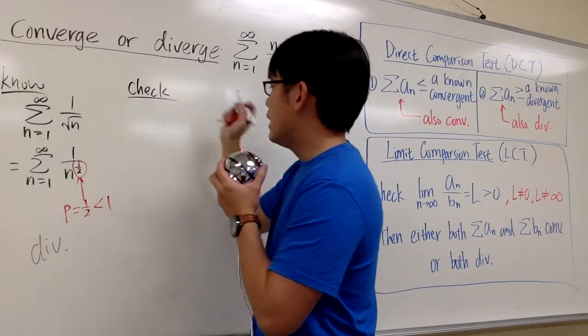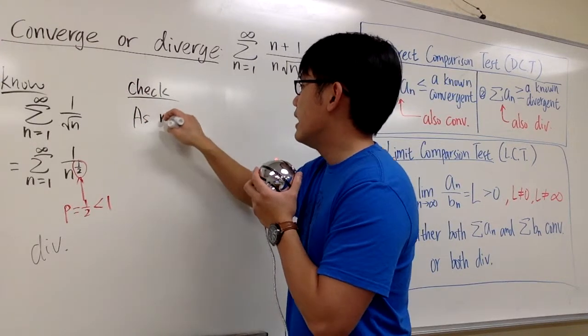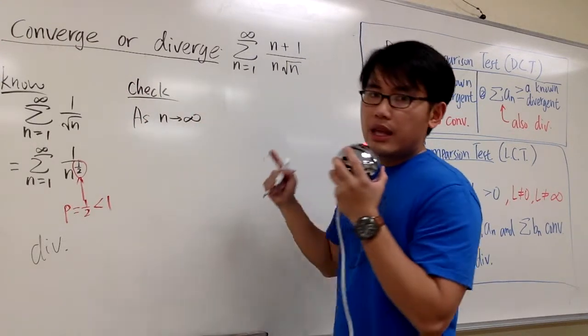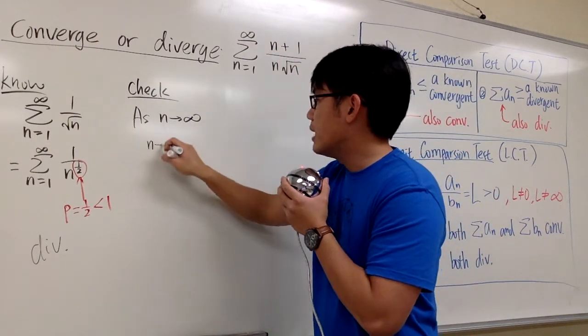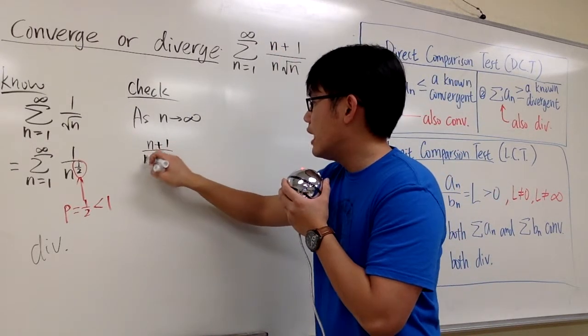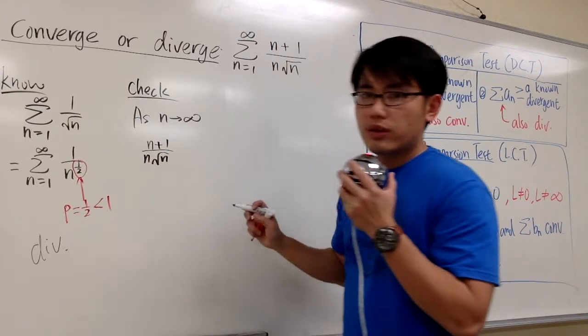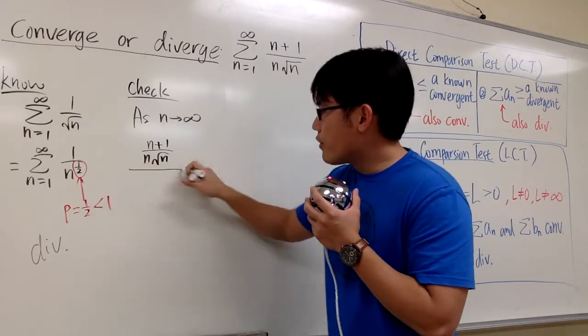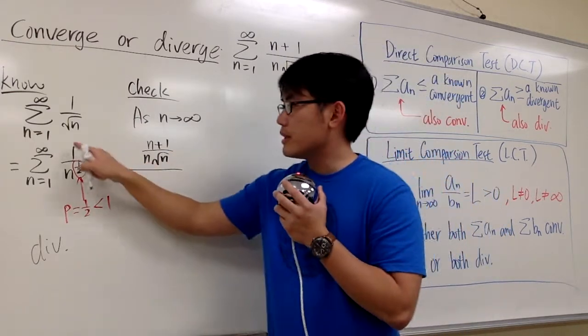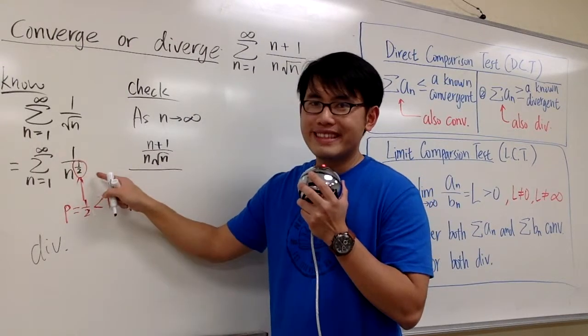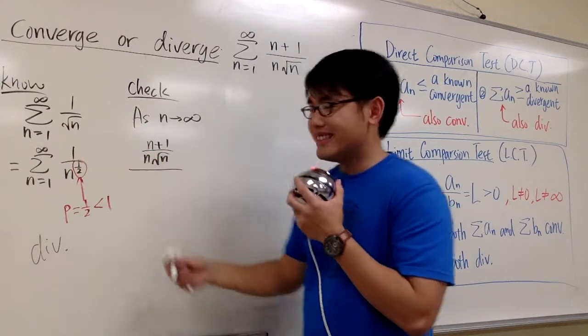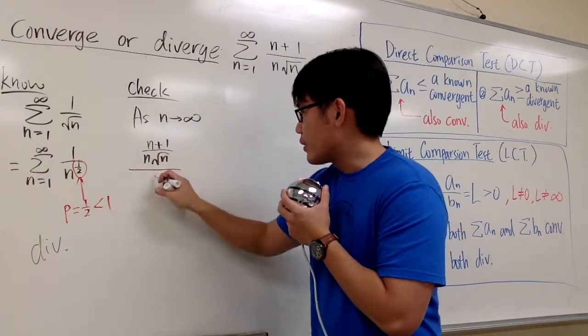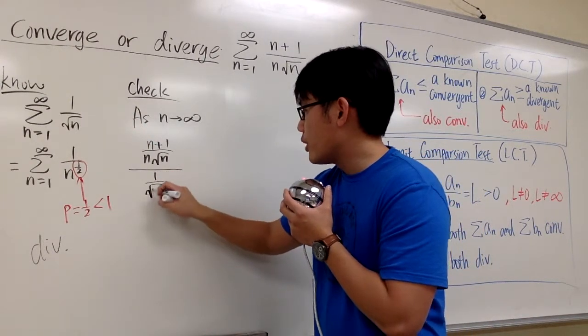So check. And I will just write it down as n goes to infinity. a_n is this expression here. Let's put it on the top. n plus 1 over n times square root of n over b_n, which is this. That we know much better. And then let me just put it in the 1 over square root of n form. So, let me put that down right here. 1 over square root of n.